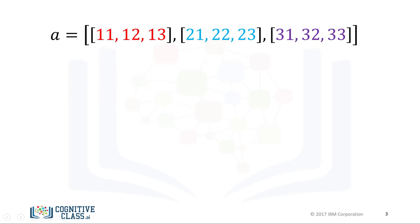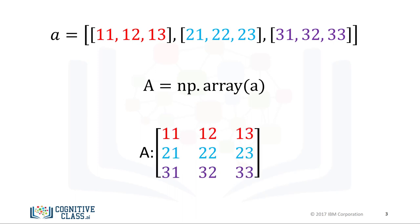Consider the list A. The list contains three nested lists, each of equal size. Each list is color-coded for simplicity. We can cast the list to a NumPy array as follows. It is helpful to visualize the NumPy array as a rectangular array. Each nested list corresponds to a different row of the matrix.